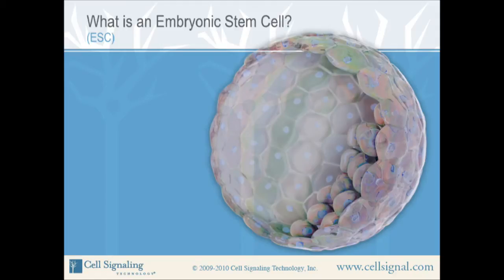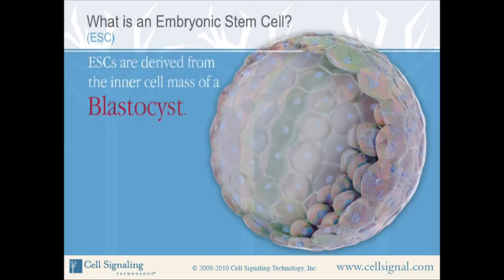What is an embryonic stem cell? Embryonic stem cells, also called ESCs or ES cells, are cells derived from the inner cell mass of a blastocyst.